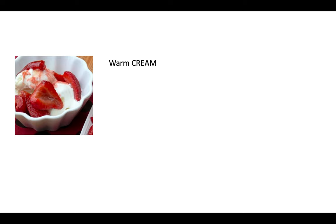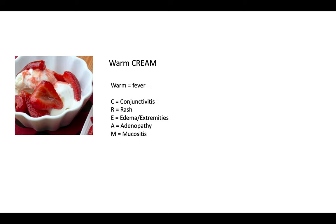So how do we remember all of this? The mnemonic I've come up with is called WARM CREAM. Looking at the picture, you can see some strawberries and cream. WARM refers to the fever. Breaking down CREAM: C for conjunctivitis, R for the rash on the trunk, E for edema of the extremities — the hands and feet, A for adenopathy as in lymphadenopathy, and M for mucositis. You can link the M to the strawberry tongue appearance as shown in the picture.